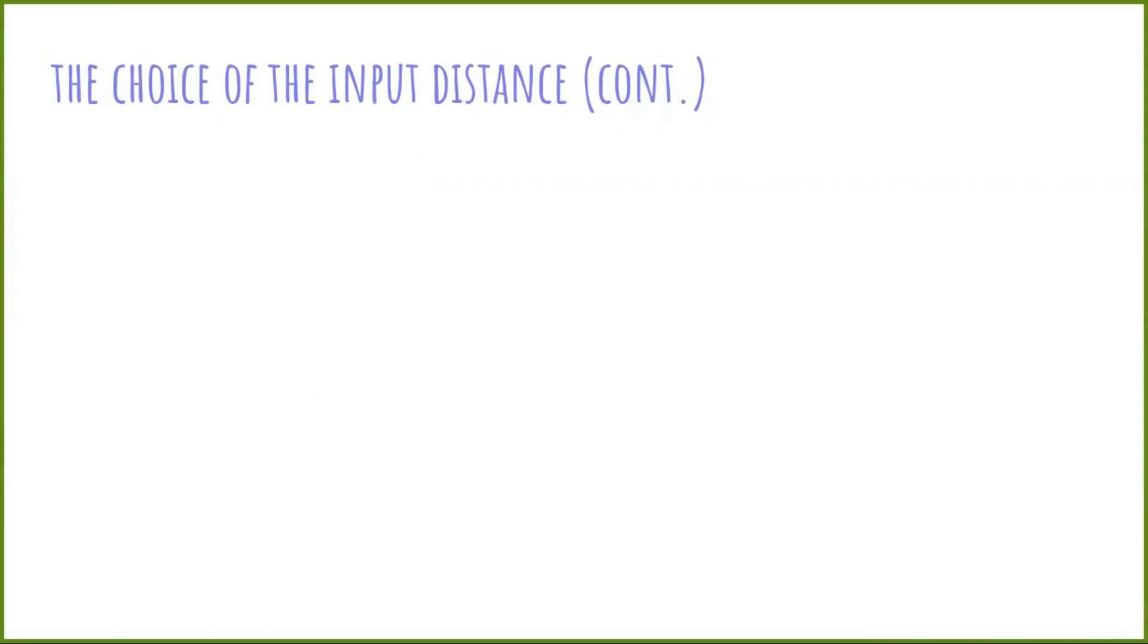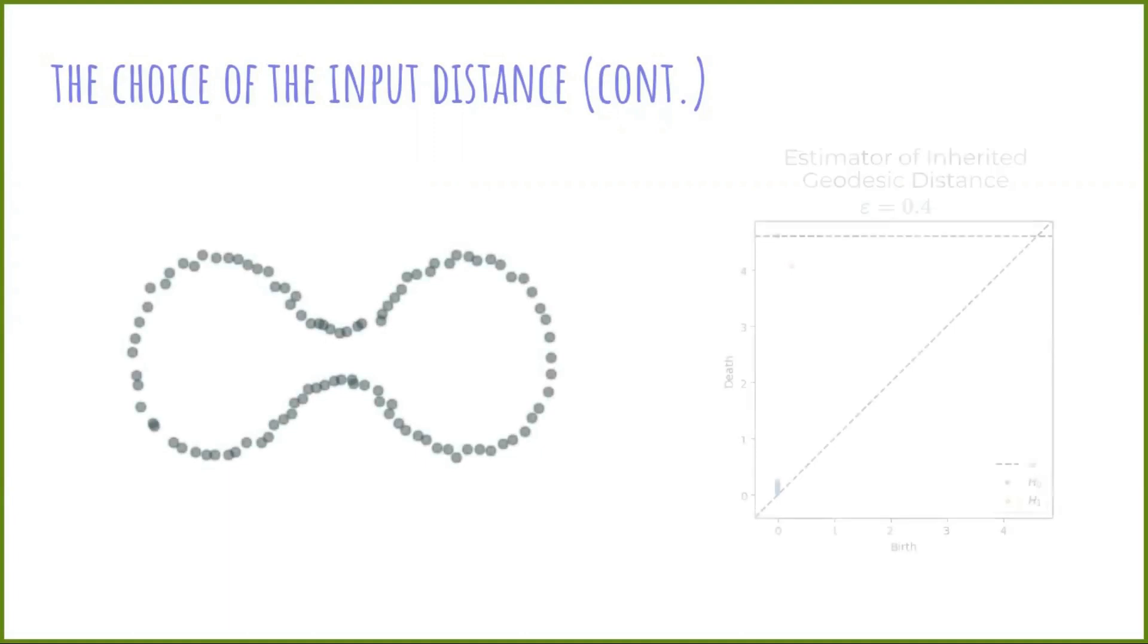With this estimator in mind, let's make a new attempt to compute the persistent homology of the sample of the glasses. This time, using as input the estimated geodesic distance. This is what we obtain. We can see that we recover successfully the single generator of H1. So we're done. Or maybe not.